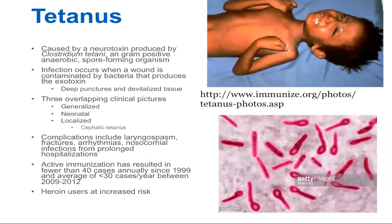So we'll talk about tetanus next. Tetanus was first described very early on in the 5th century B.C. They really realized what caused tetanus when they reproduced it in the animal model in the 1880s. They had a case of a human who died, and they injected some pus from this into animals and were able to cause the clinical symptoms of tetanus.